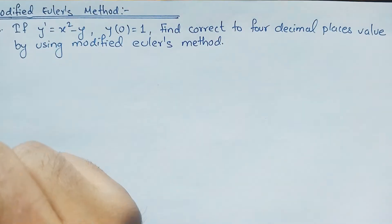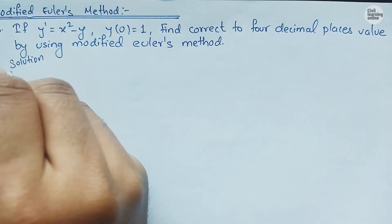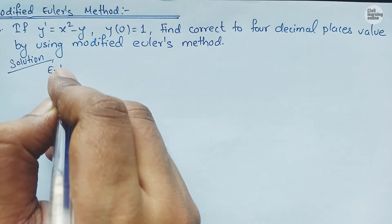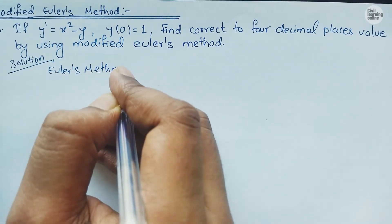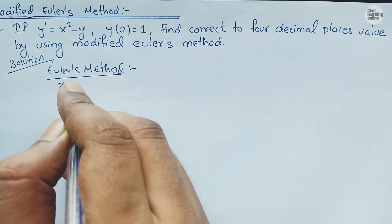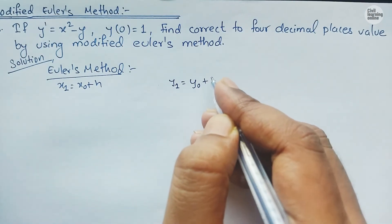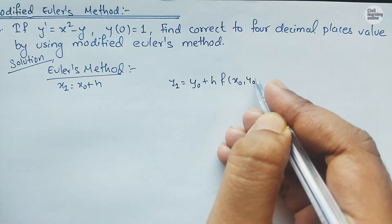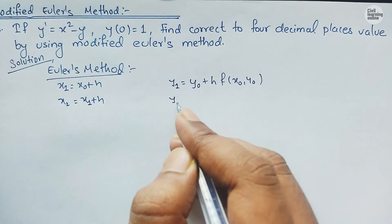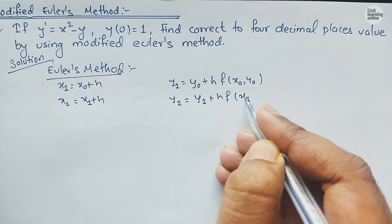Let's begin writing the solution. First, let's recall the formula for Euler's method: x1 = x₀ + h, y1 = y₀ + h·f(x₀, y₀). Similarly, x2 = x1 + h, y2 = y1 + h·f(x1, y1). This is what we used while solving numericals based on Euler's method.